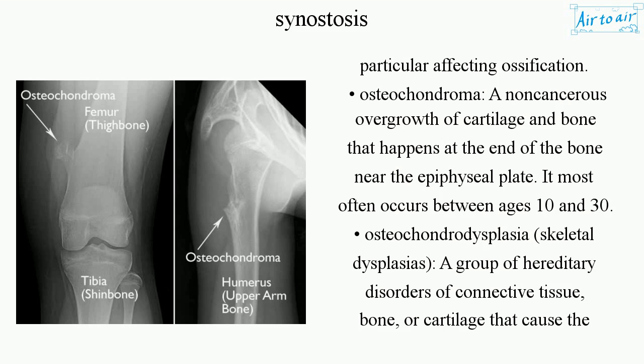Osteochondroma is a non-cancerous overgrowth of cartilage and bone that happens at the end of the bone near the epiphyseal plate. It most often occurs between ages 10 and 30.